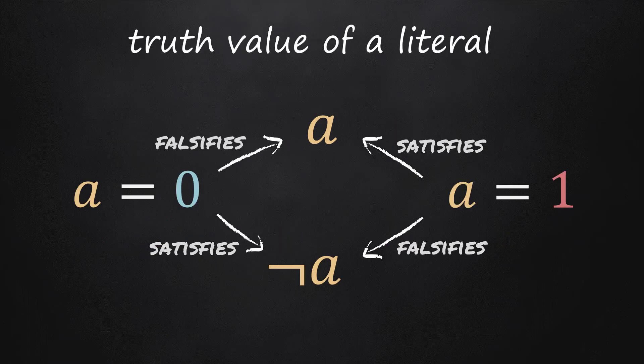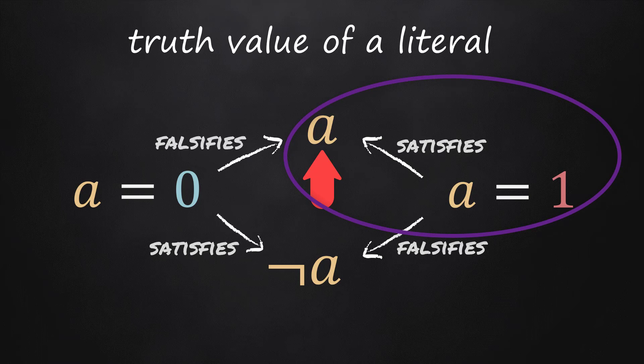Any positive literal a is said to be satisfied if the related variable a is set to true, and it is said to be falsified if the variable a is set to false.